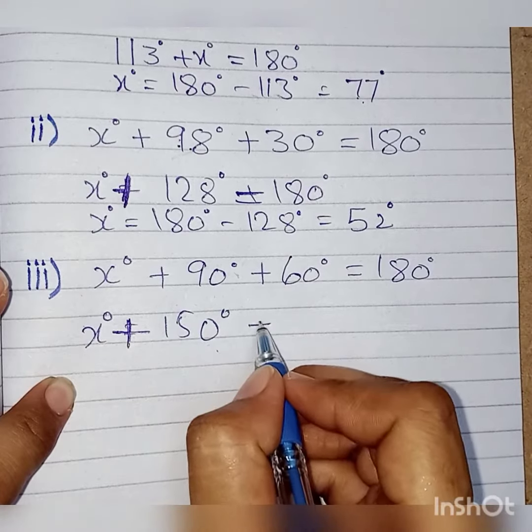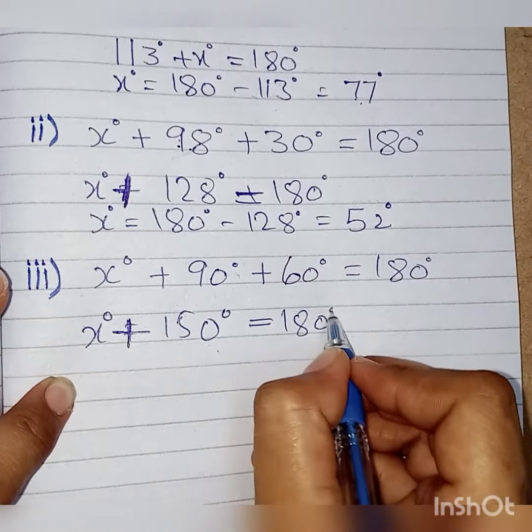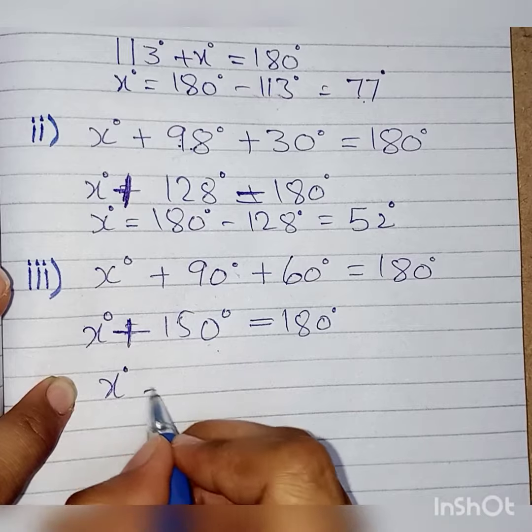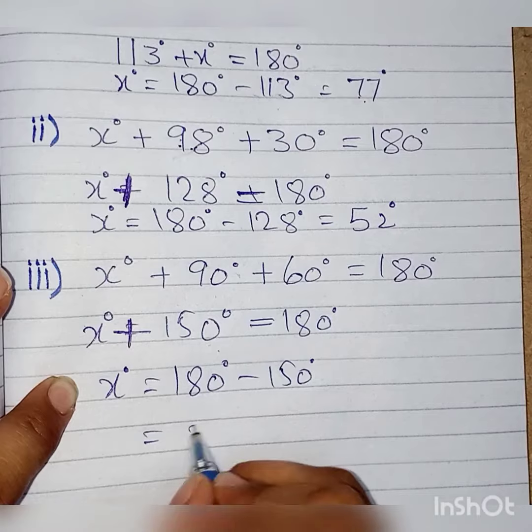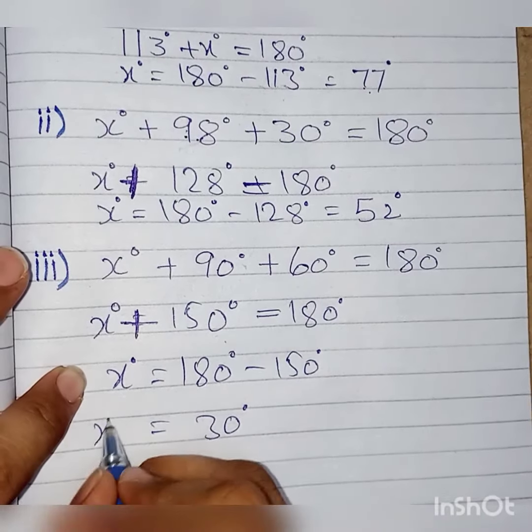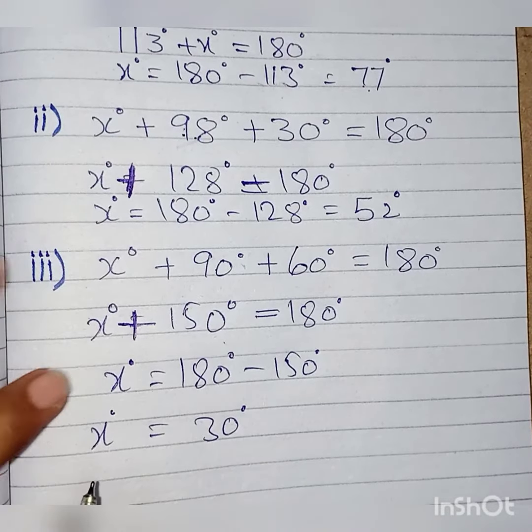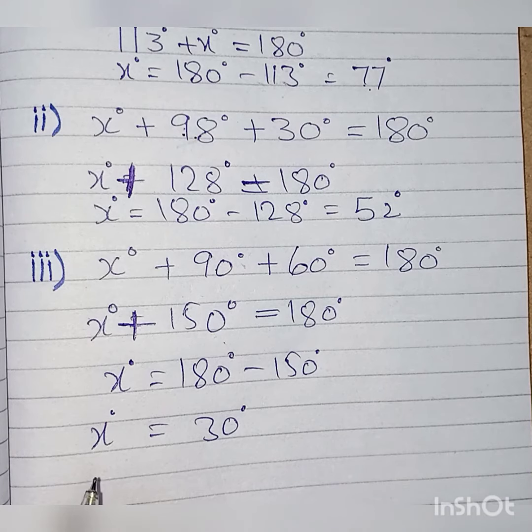150 degrees is equal to 180 degrees. We will find x degrees. So we will subtract 150 degrees from 180 degrees. When we minus, we will have 30 degrees. The value of x is 30 degrees. So our question is complete.